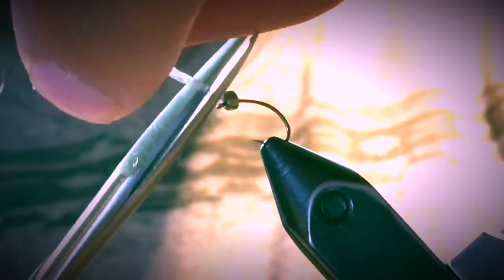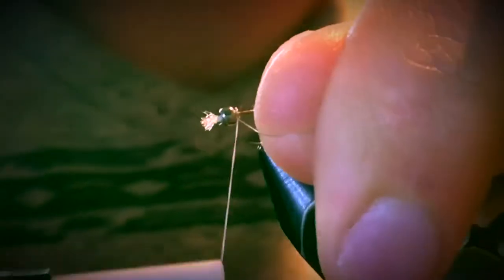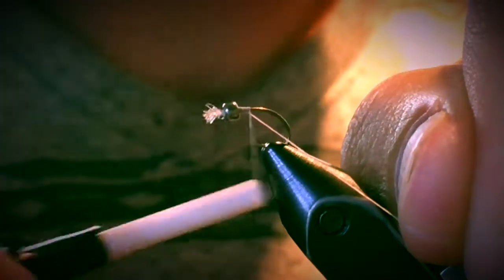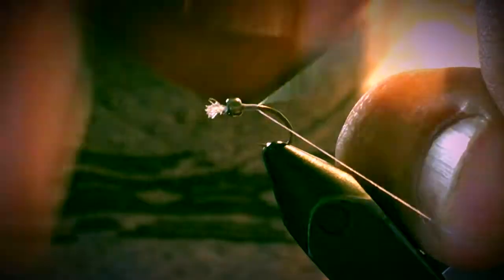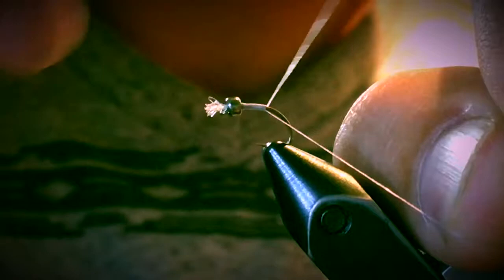Now you can pull the bead up and clip the antron if you haven't already. I'm going to take a 6-0 thread, it's still gray, and then just wind it down.